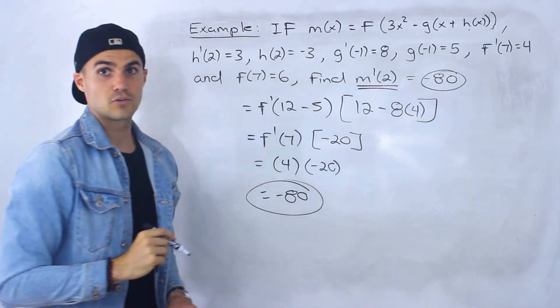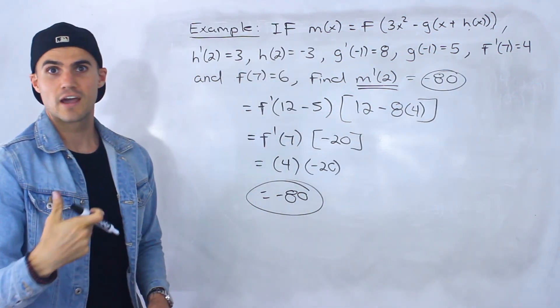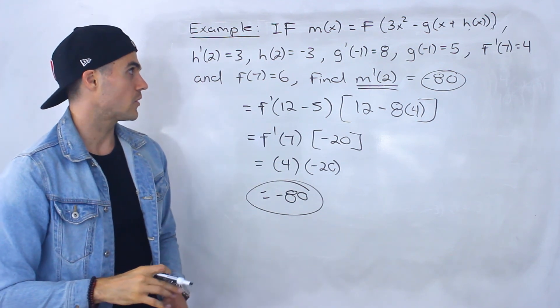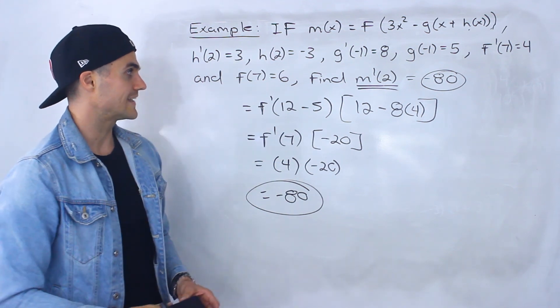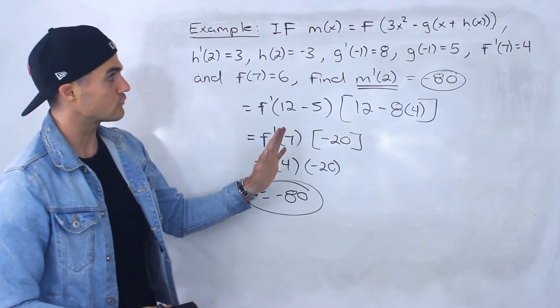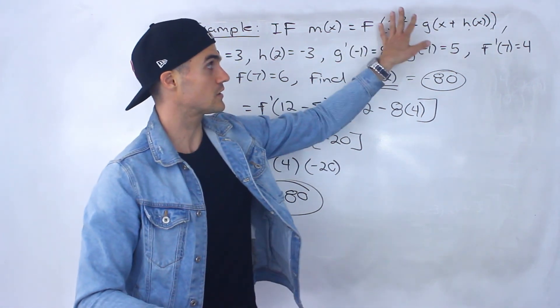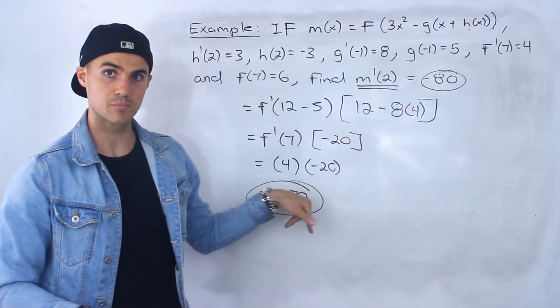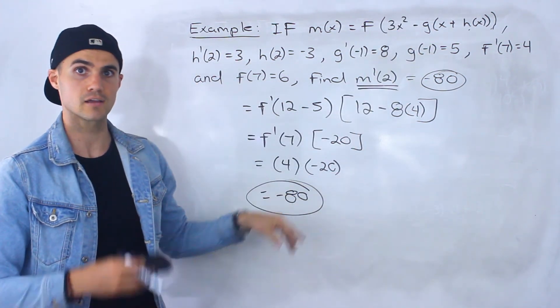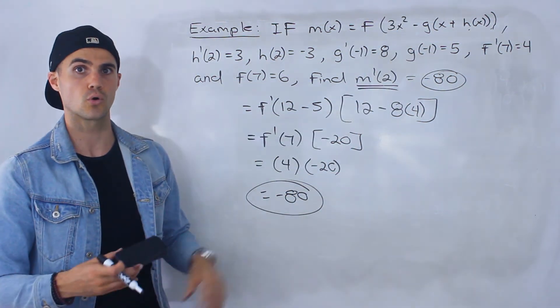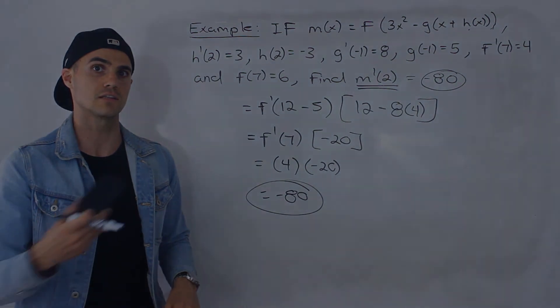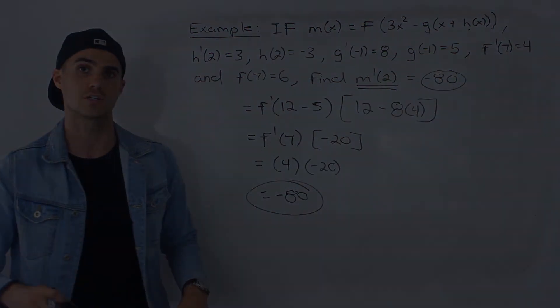So that's the answer for m prime of 2 — it is negative 80. There's a lot going on, so you may want to review that process one more time. Be careful with brackets, especially when you get something complex like this, because one slip-up with a bracket can change your whole answer. Make sure you're practicing these types of questions a lot.